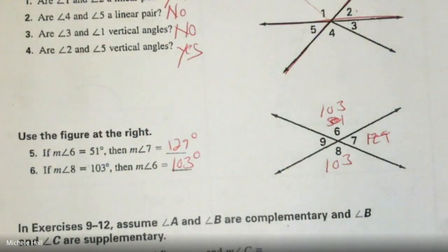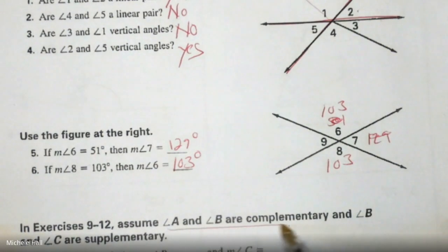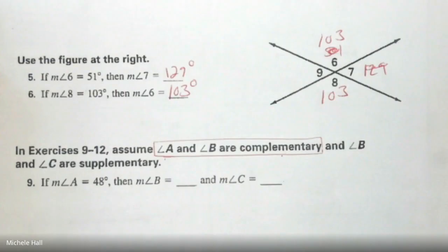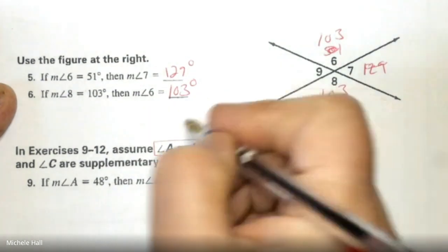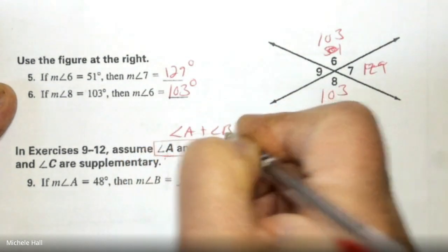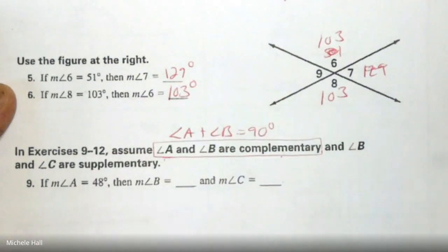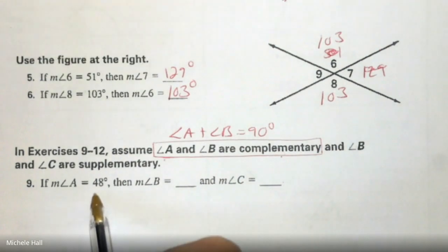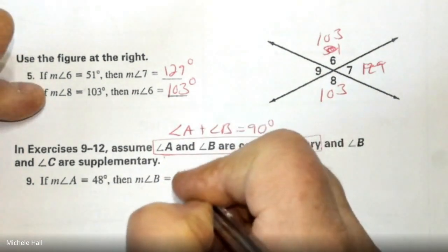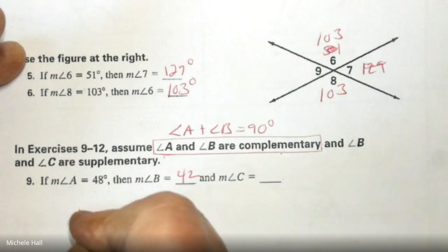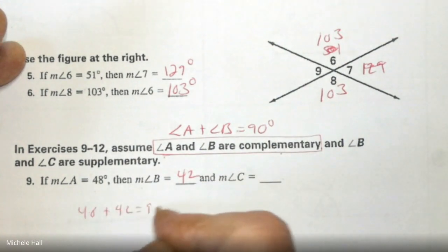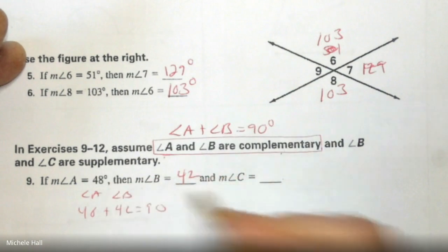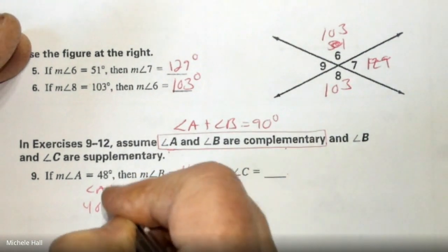Okay, here we go. In the next part, it says that A and B are complementary. What does that mean? The sum of their measures. That means Angle A plus Angle B equals 90 degrees. So if Angle A is 48, how much is Angle B? 42. Because 48 plus 42 equals 90. Angle A, Angle B.